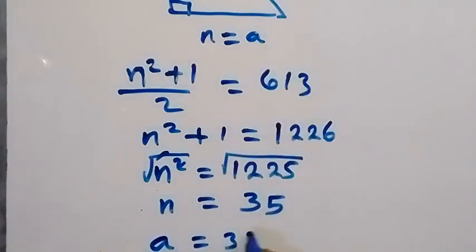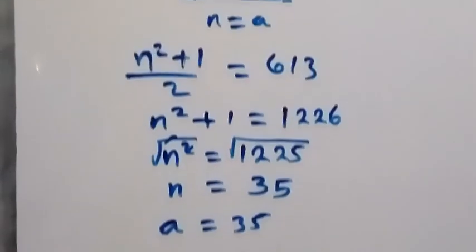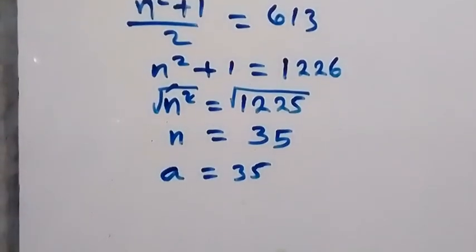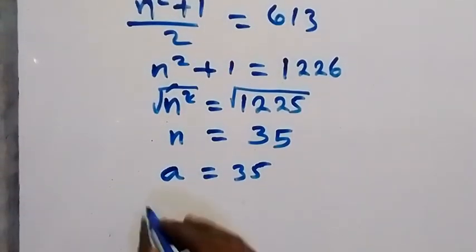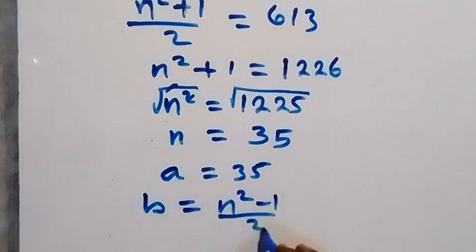Now to get b, we can make use of this n form of b, that is n squared minus 1 over 2. So we solve for b: b equals n squared minus 1 over 2, and we got n to